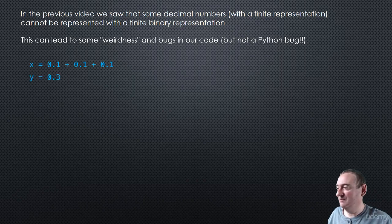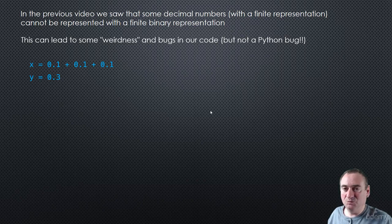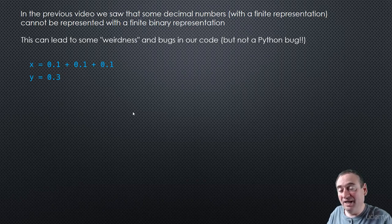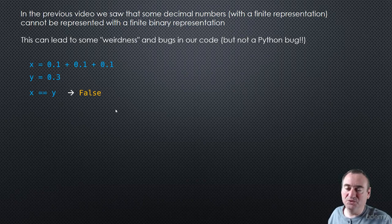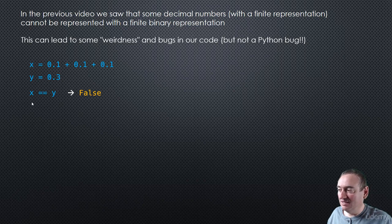Let's look at that very simple example from the last video. Let's say we set x equal to that summation and y equal to 0.3. Now in our minds when we look at these decimal representations — 0.1, 0.1, 0.3 — remember that behind the scenes they're actually being stored as binary representations. And if we try x == y, that expression will actually evaluate to false. Those are not equal numbers, and if we expect these floats to be equal, then there's going to be a bug in our code.